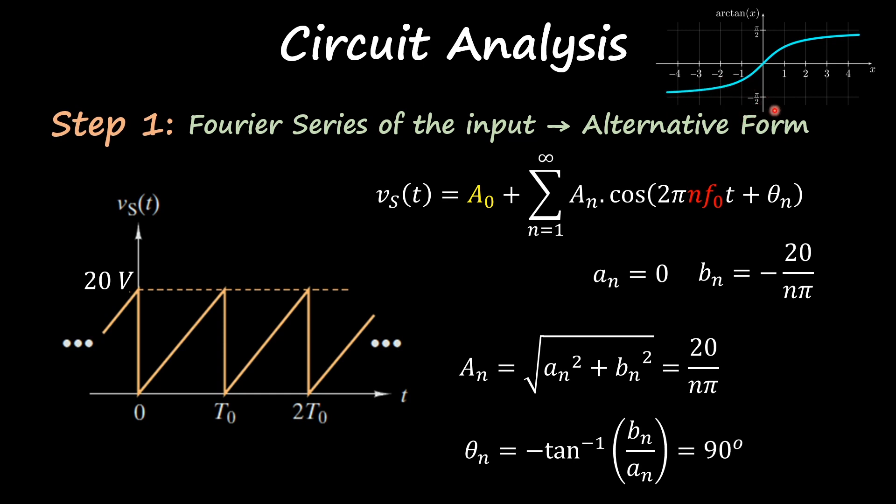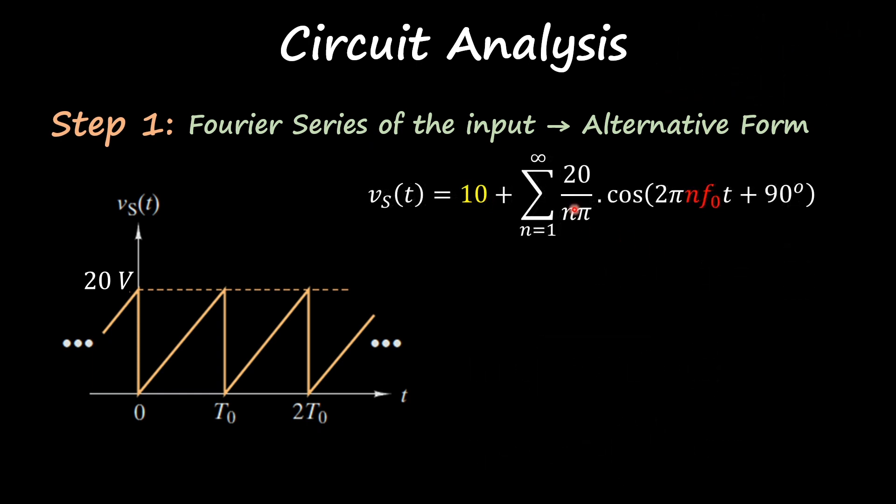Notice that a negative number divided by zero goes to minus infinite, which is going to converge to minus 90 degrees. So minus 90, that minus gives you a positive 90 degrees. I'm going to plug this a_n and 90 into your alternative form and you get this expression. We are done for step number one.